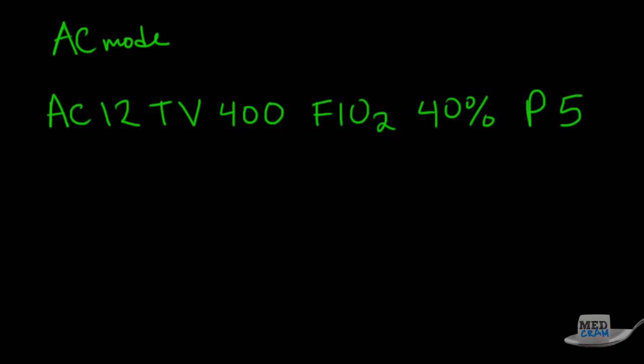And let's say that the blood gas results were 7.26, 60, 55, 26. So for those of you who don't know, this is the pH, that's a little low. This is the PCO2, that's a little high. This is the PO2, that's low. And this is the bicarb.